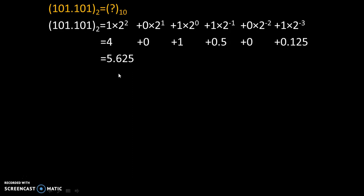So this will be our final answer. We can write (101.101)₂ = (5.625)₁₀. This means 101.101 in binary is equivalent to 5.625 in decimal.